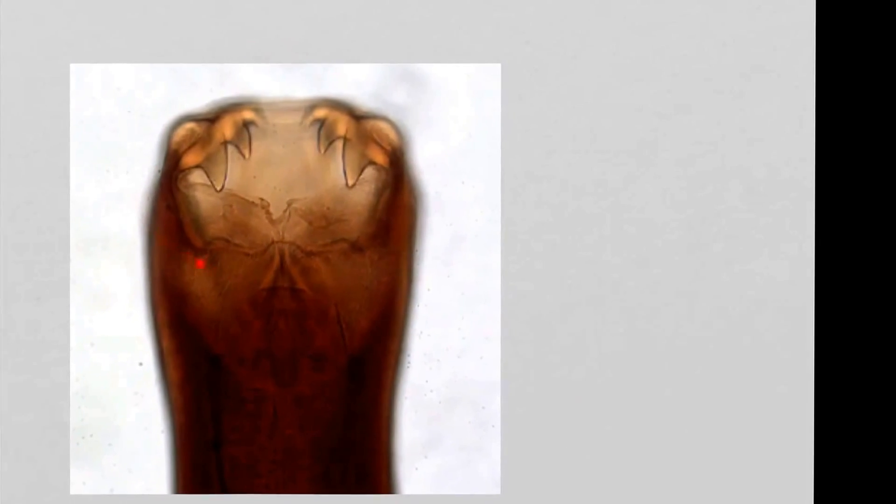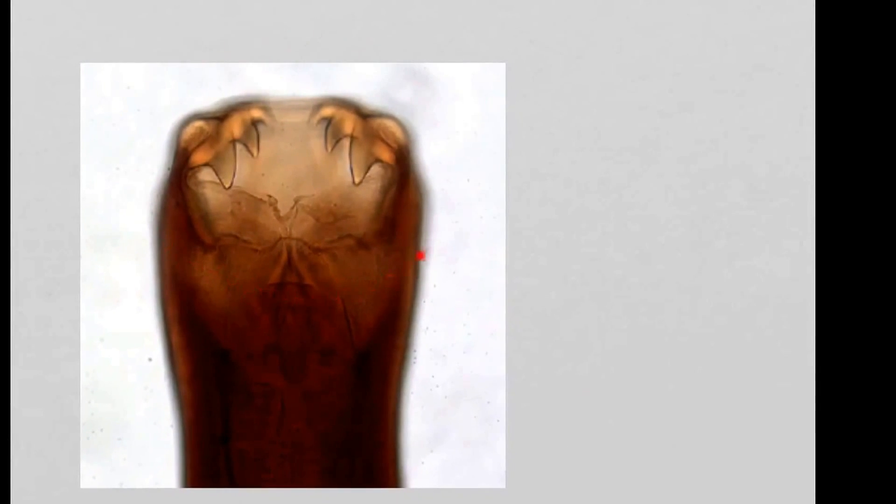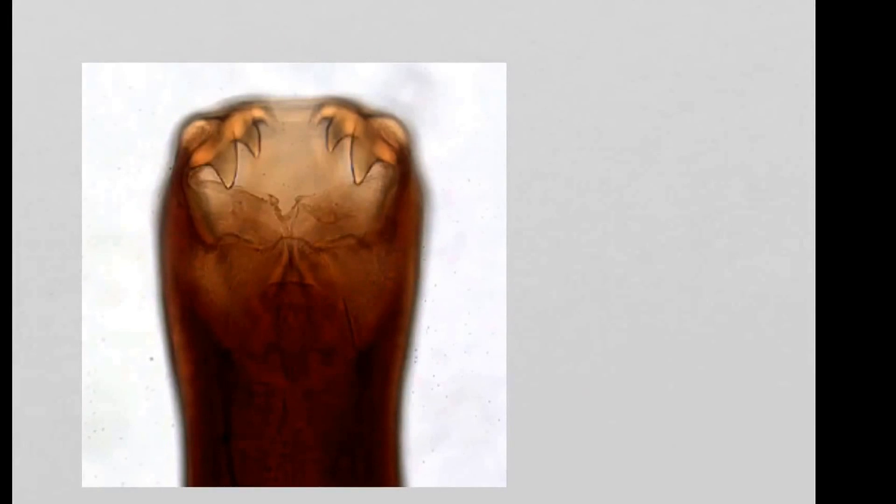So this is the mouth part of a hookworm that's commonly found in dogs. And what you see is, here is the mouth and here are these really sharp teeth, with which the worm bites into usually the intestine and it anchors itself to the intestine and it sucks the blood of the victim, which obviously is not very nice.